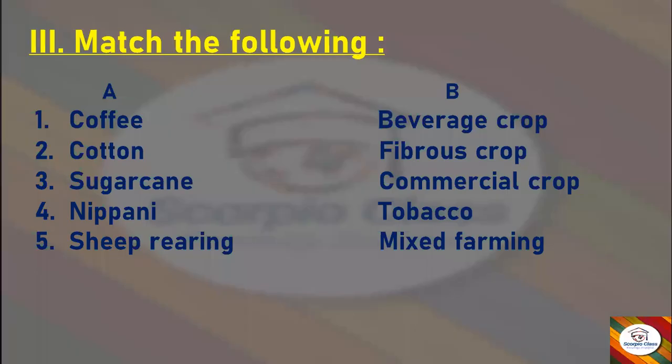Next we have 'Match the Following.' The answers are correctly matched as follows: Coffee — beverage crop; Cotton — fibrous crop; Sugarcane — commercial crop; Nippani — tobacco; Sheep rearing — mixed farming. These are all the match the following answers.